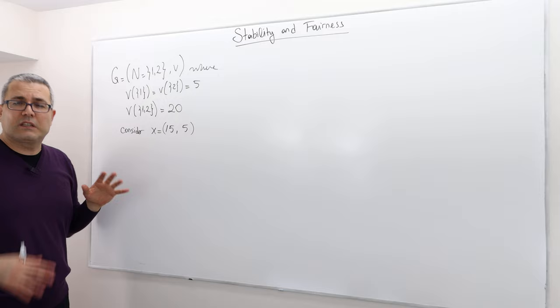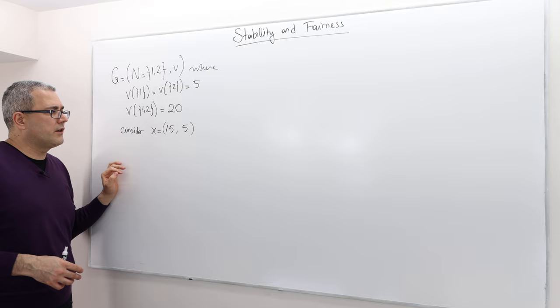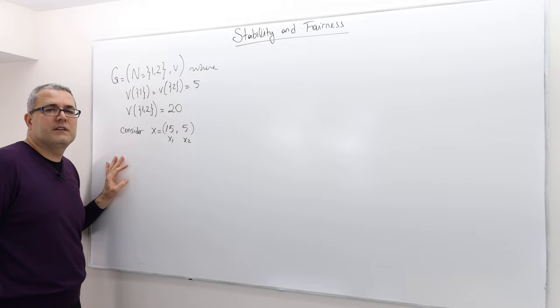So this is clearly a super additive game, all right? So meaning the grand coalition should be formed. But then, let's consider this outcome vector. 15, the first player gets, so this is x1, and 5, the second player gets.